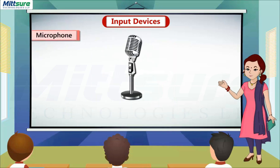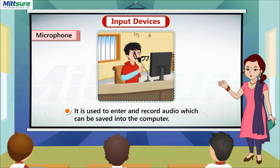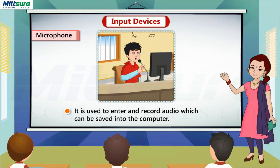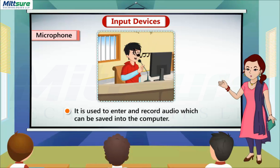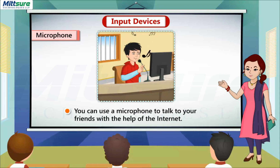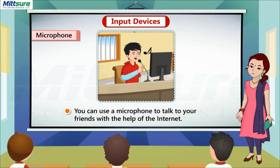Microphone: another input device is a microphone. It is used to enter and record audio, which can be saved into the computer. You can use a microphone to talk to your friends with the help of the internet.